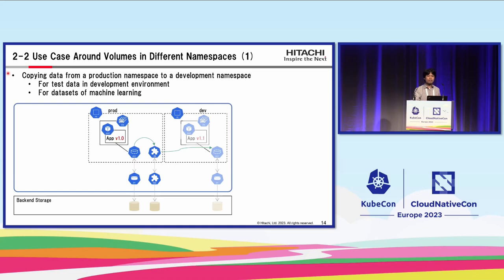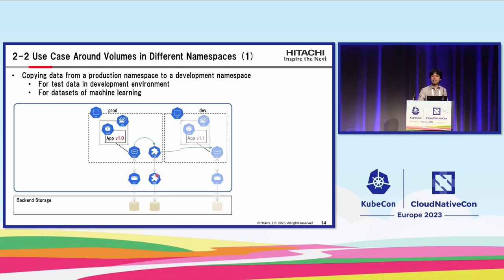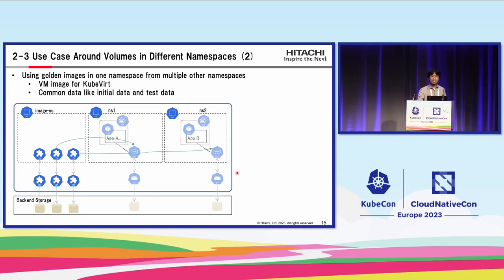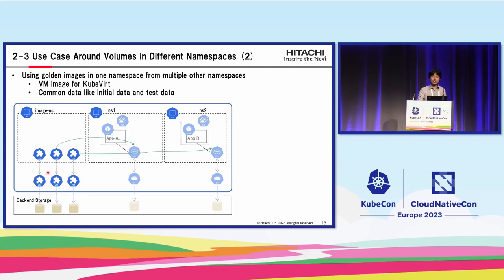The first use case is copying data from a production namespace to a development namespace. Let's assume there is an app v1.0 pod writing data to a PVC in the prod namespace. If a developer is developing app v1.1 in the dev namespace and would like to test with actual data, copying data from prod to dev is required. The second use case is using a golden image in one namespace from multiple other namespaces. The same golden images are expected to be used from multiple namespaces, so putting the same data in each namespace is inefficient. Therefore, golden images are expected to be shared across namespaces.